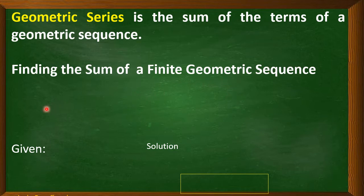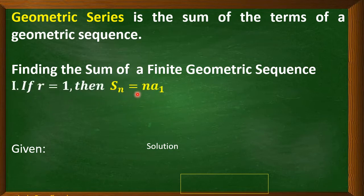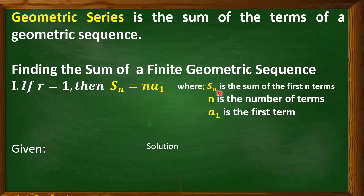The first formula that you need to remember is S sub n equals n times a sub 1. You will be using this formula if r, the common ratio, is equal to 1. Where S sub n is the sum of the first n terms, n is the number of terms, and a sub 1 is the first term.